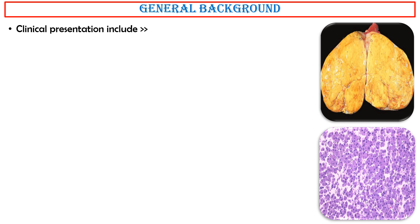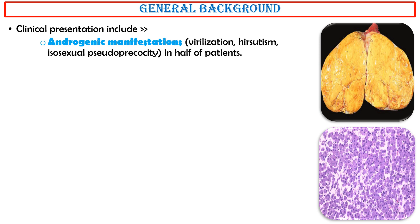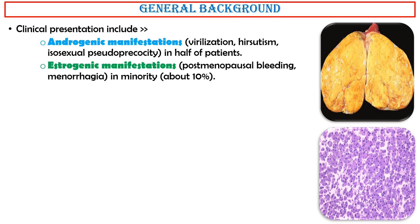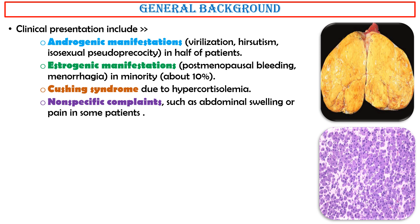The clinical presentation includes androgenic manifestations such as virilization and hirsutism, and isosexual pseudoprecocity in half of patients. Estrogenic manifestations include abnormal uterine bleeding and menorrhagia in a minority of about 10%. Cushing syndrome due to hypercortisolemia may occur, as well as non-specific complaints such as abdominal swelling or pain in some patients.